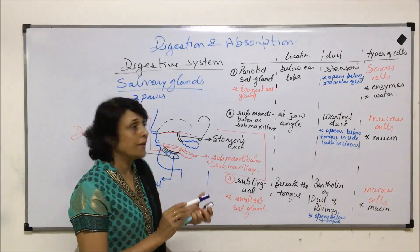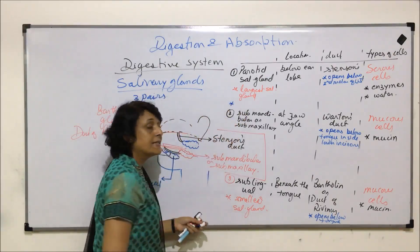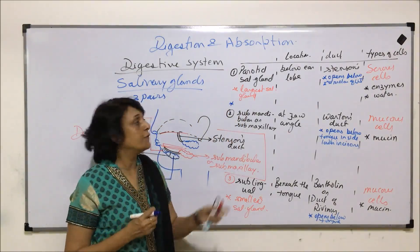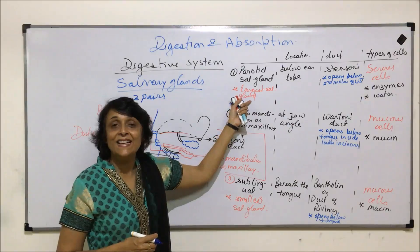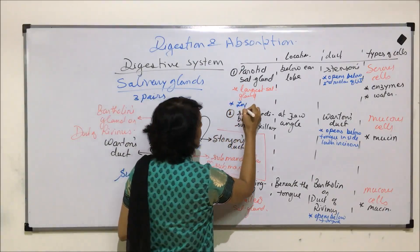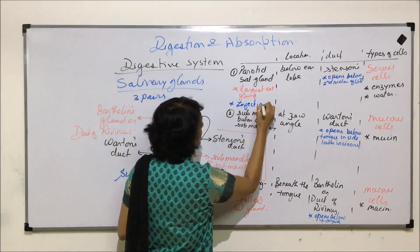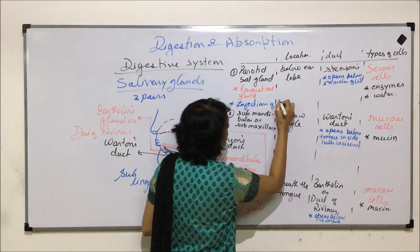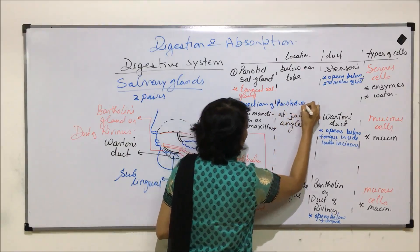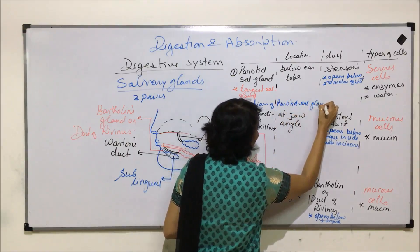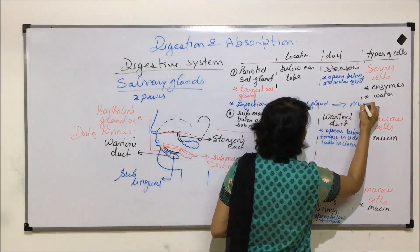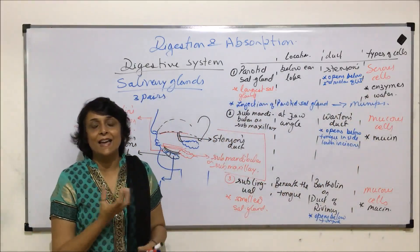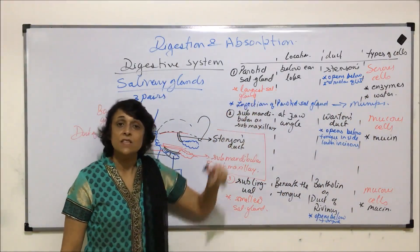One more important thing about the parotid salivary gland: sometimes this gland gets infected, and the infection of this salivary gland is known as mumps. These are normally viral infections — infection of the parotid salivary gland is known as mumps. It is a painful condition when the glands get inflamed because of this infection.